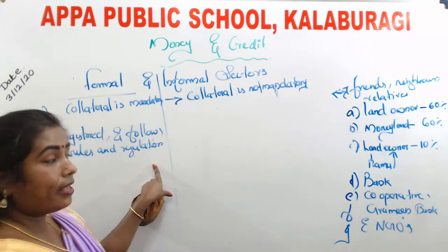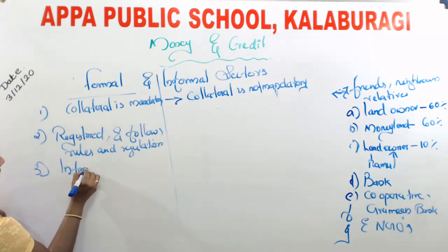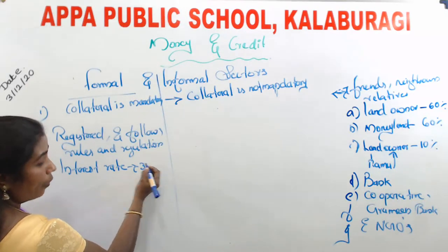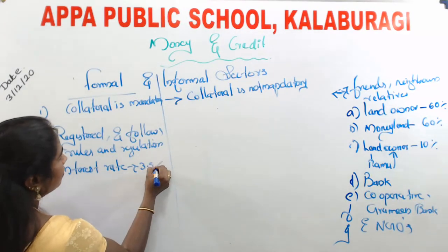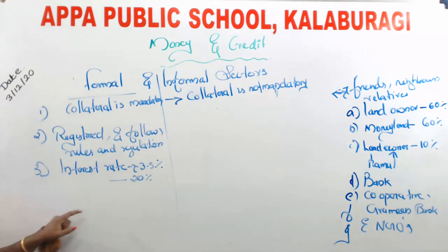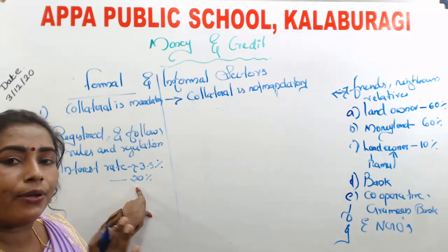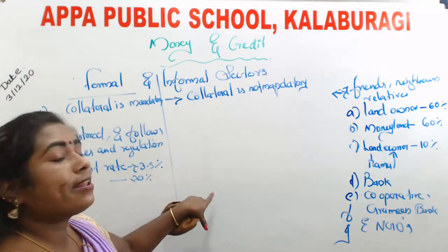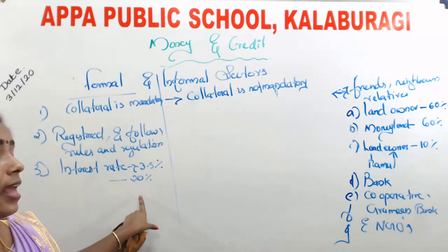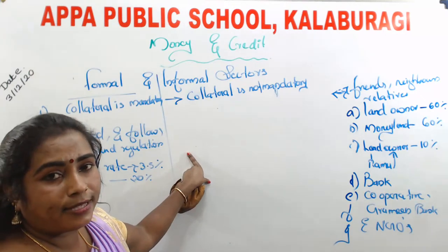Formal sources of credit are registered under the government and follow rules and regulations. The rules include: first, a fixed interest rate ranging from 3.5 percent to a maximum of 20 to 23 percent. The interest rate varies by loan type, not from person to person — even if you know the bank manager, you will not get a different rate. This fixed interest rate is absent in the informal sector. For example, in cases one and three, both were landowners but charged 60 percent and 10 percent respectively based on personal relationship.